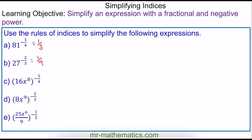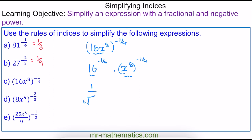For question C, we have 16x to the power of 8, all raised to the power of negative 1 quarter. To evaluate this, I'm going to consider 16 to the negative 1 quarter multiplied by x to the power of 8 to the power of negative 1 quarter — splitting this expression up into 16 and x to the 8. Now 16 to the negative 1 quarter is 1 over the fourth root of 16. And now I can use the power rule to evaluate this.